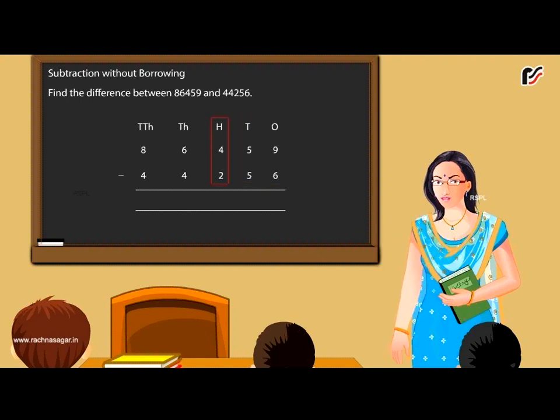hundreds under hundreds, and so on. Beginning with the ones, we go on subtracting column-wise. 9 minus 6 equals 3. Write 3 under the ones column. 5 minus 5 equals 0. Write 0 under the tens column.